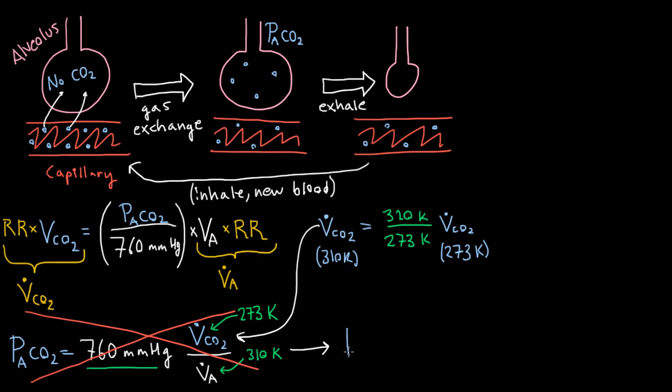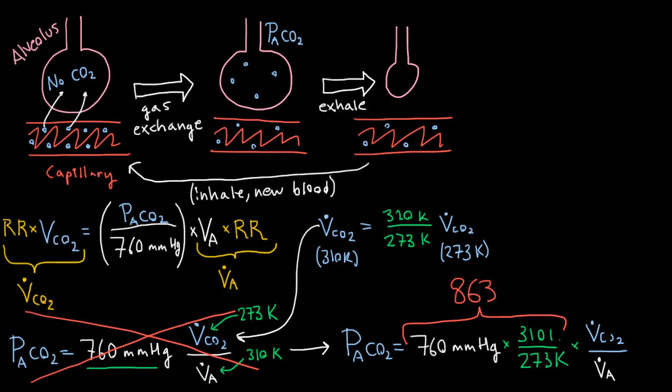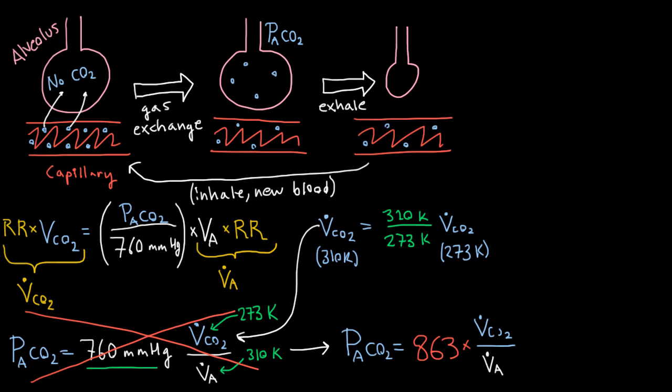So we're going to keep everything, except that one term that we want to change. And we're going to find... So what happens if we combine these terms together? Well, we get 863. So let me do that magically. And this is our final nice equation. And note that I've gotten rid of the millimeters of mercury, but you know it's there.